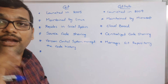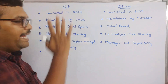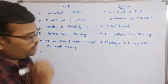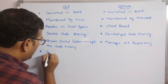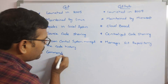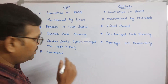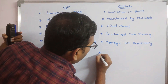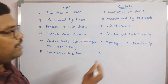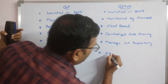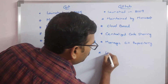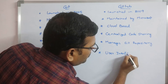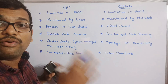Git comes with a command line. Since it is maintained by Linux, the complete actions are performed with the help of commands — it is mainly a command-line tool, though it also comes in graphical form. GitHub comes with a graphical user interface, like a website, so it has a user interface similar to a website.